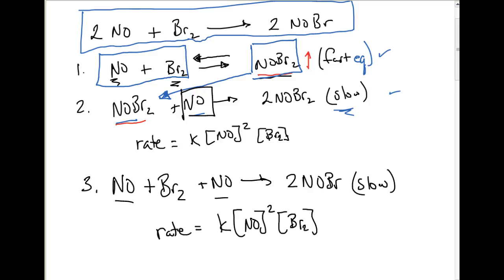So that matches our experimental rate law and that's how we can get around that in kind of a simplistic way. Again, take your fast equilibrium and plug it into your slow step and that's how that happened.